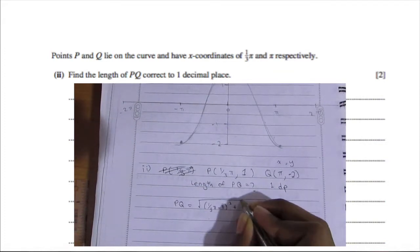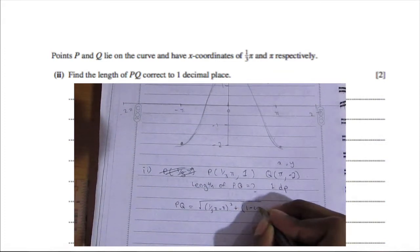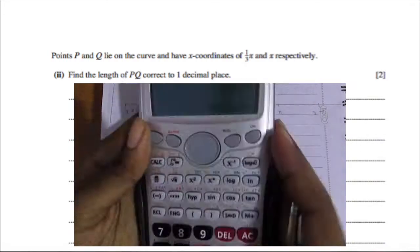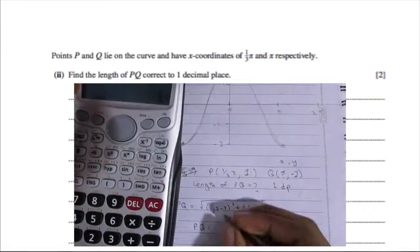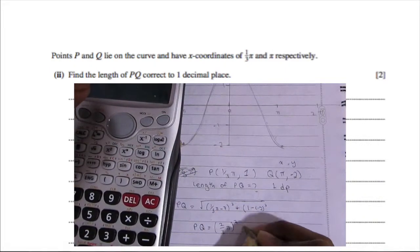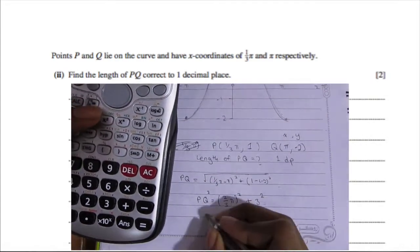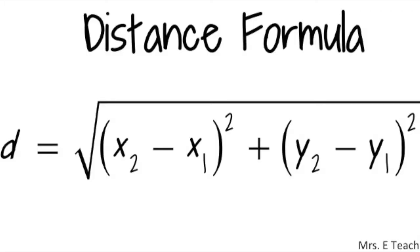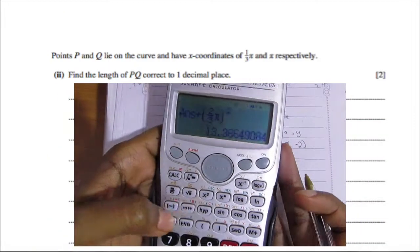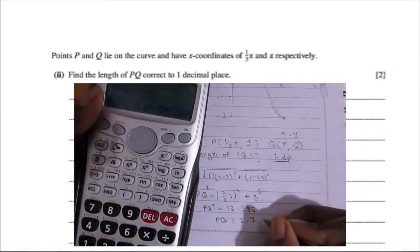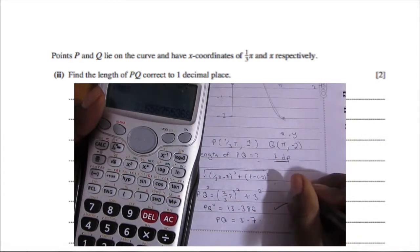For the length of PQ we use the distance formula: √[(π/3 − π)² + (1 − (−2))²]. Placing that in the calculator gives PQ = 3.7 to one decimal place. That is a total of two marks.